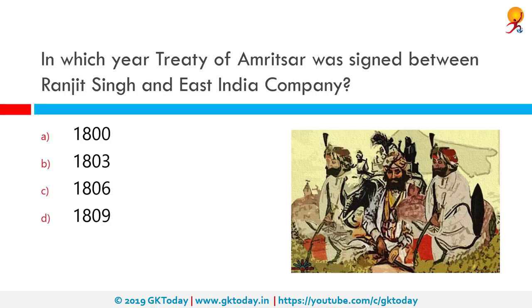In which year was the Treaty of Amritsar signed by Ranjit Singh and the East India Company? This was in 1809. It was an agreement between the British East India Company and Ranjit Singh, the founder of the Sikh Empire. The Treaty of Amritsar 1846 was another treaty that formalized arrangements in the Treaty of Lahore between the British India Company and Maharaja Gulab Singh Dogra after the First Anglo-Sikh War.